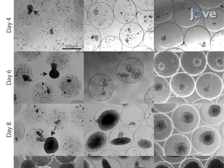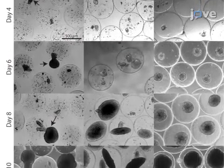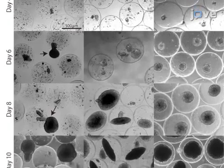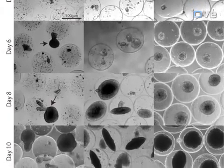Ultimately, alginate encapsulation of pluripotent stem cells prevents the cells from aggregating excessively and limits the shear stress experienced by the cells in suspension culture.